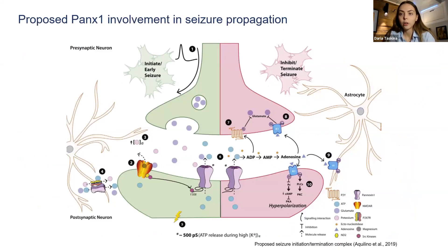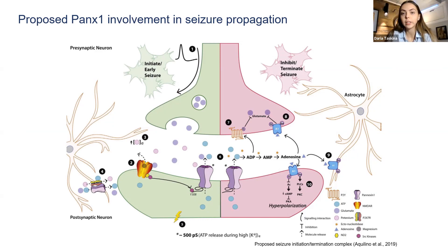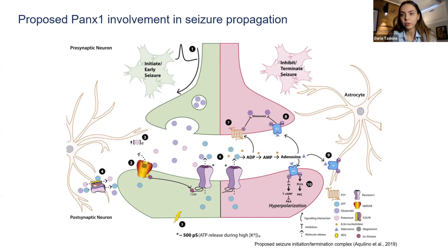There are two main models for how Pannexin-1 could be involved. On the left in green, this is a model for when Pannexin-1 is helping to propagate seizures — it has to do with a heightened concentration of glutamate, creating a hyperactive excitatory loop. On the right in pink, this is a model for how Pannexin-1 could be inhibiting or terminating seizures instead, through its interactions with P2Y, inhibiting glutamate release, and creating hypopolarization in the postsynaptic neuron. We're trying to find out which model Pannexin-1 resembles more.